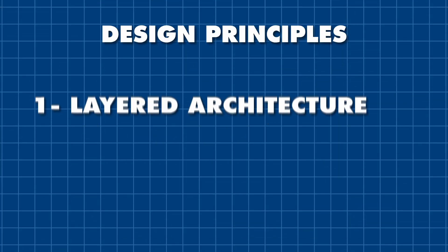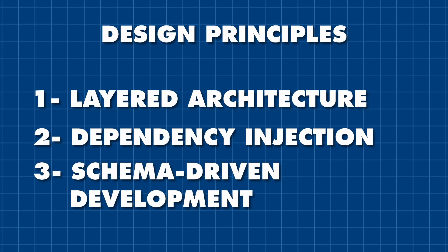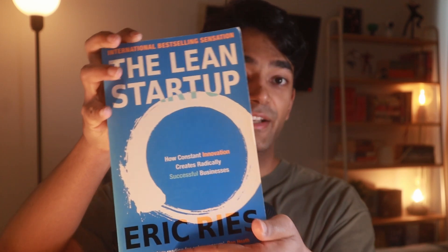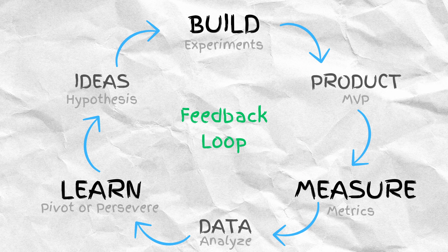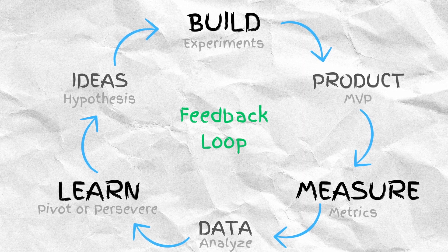Now that I've shown you the three design principles, let's talk about why I've gone through the trouble of setting these up for my startup. I've been reading this book called The Lean Startup by Eric Ries, and one of the key ideas he emphasizes is that startups need to move quickly — and to move quickly, they need to be able to experiment and pivot based on user feedback. So let me run you through some exercises and show you how these principles might make that possible.